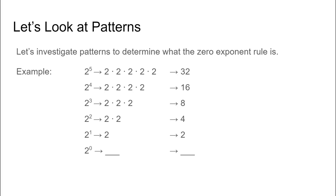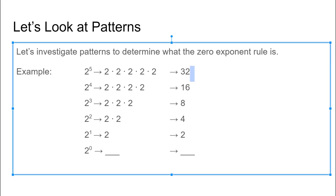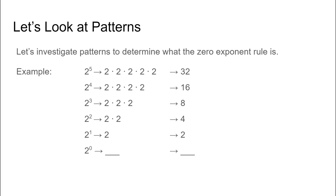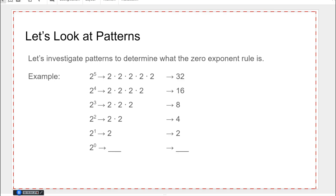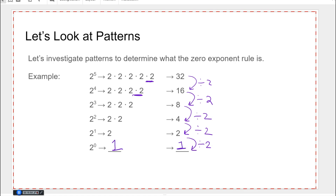We're going to talk about the zero exponent by looking at some patterns. If I expand out two to the fifth I get 32; two to the fourth, 16; two to the third, eight; two to the second, four; two to the first, two. Now two to the zero — let's take a look. How did we get from 32 to 16? We divided by two. From 16 to eight, divide by two; eight to four, divide by two; four to two, divide by two. So if we continue that pattern, two divided by two is one. Two to the zero power is one.